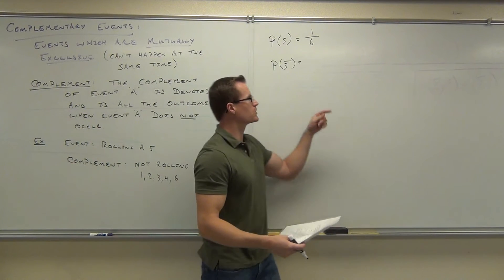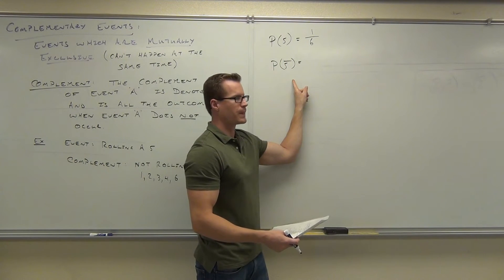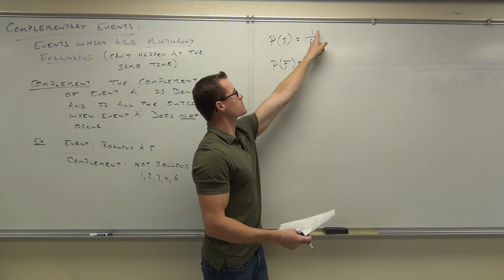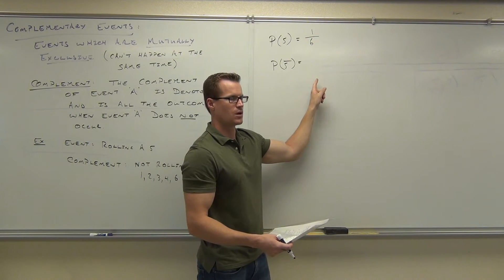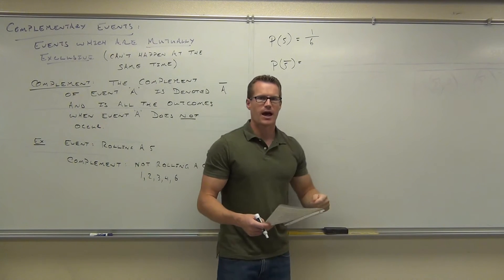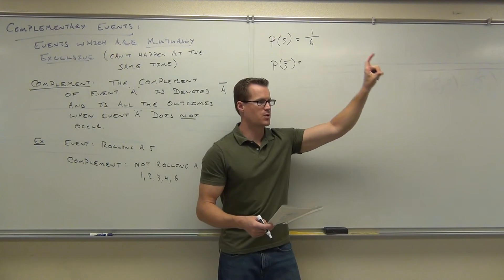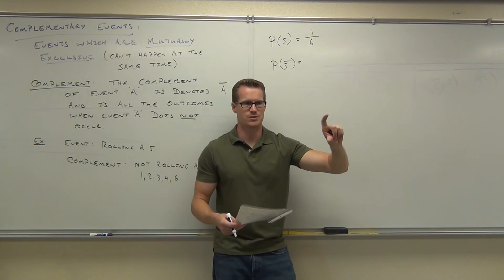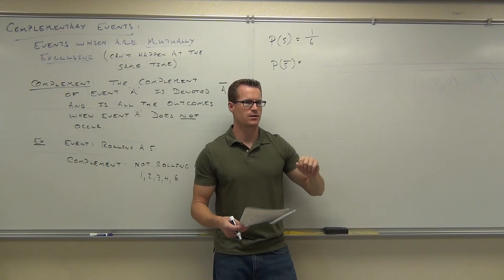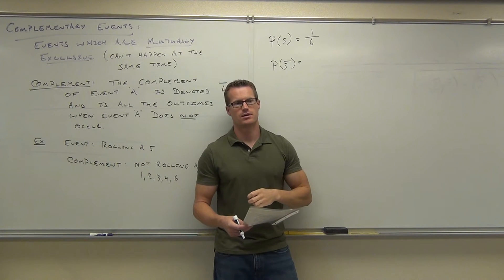Because you're either going to be here or you're going to be here. So if this is one-sixth, what does this one have to be for sure? Five-sixths. How much do you think the probability of an event plus the probability of the complement of that event has to add up to all the time? The total sample. It's going to add to the sum — what does that sum have to be? One.